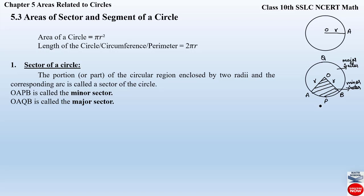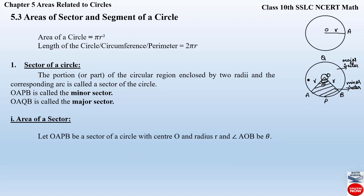So these are the important things you should know before finding the area of the sector. Now let us find out the area of the minor sector OAPB. Let OAPB be a sector of a circle with center O and radius r, and angle AOB equal to theta. When you consider a whole circle, the angle formed is 360 degrees, whereas this sector OAPB forms an angle theta. We will find two things: the area covered by this sector OAPB, and the length of the arc APB.